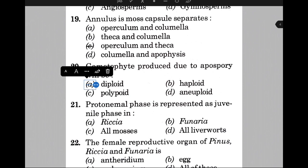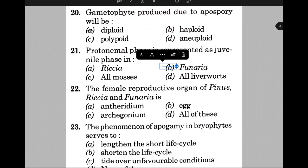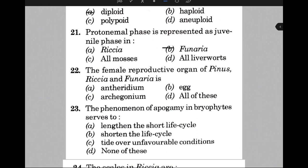Protonema phase is represented as juvenile phase in — the answer is B, that is Funaria. The female reproductive organ of Pinus, Riccia, and Funeria is — the answer is option C, that is archegonium. The phenomenon of apogamy in bryophytes serves to — the answer is B, that is shorten the life cycle.